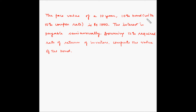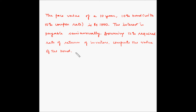Let's take an example to understand this concept better. The face value of a 10-year, 10% bond — with a 10% coupon rate — is 1000 rupees. The interest is payable semi-annually. Assuming a 12% required rate of return for investors, compute the value of the bond.